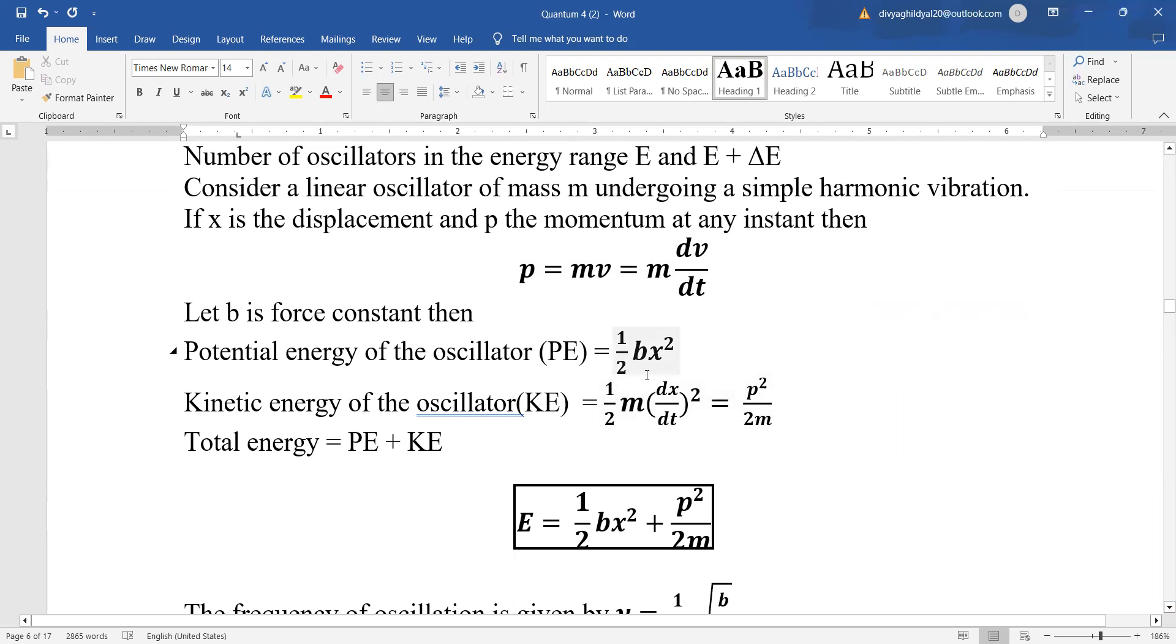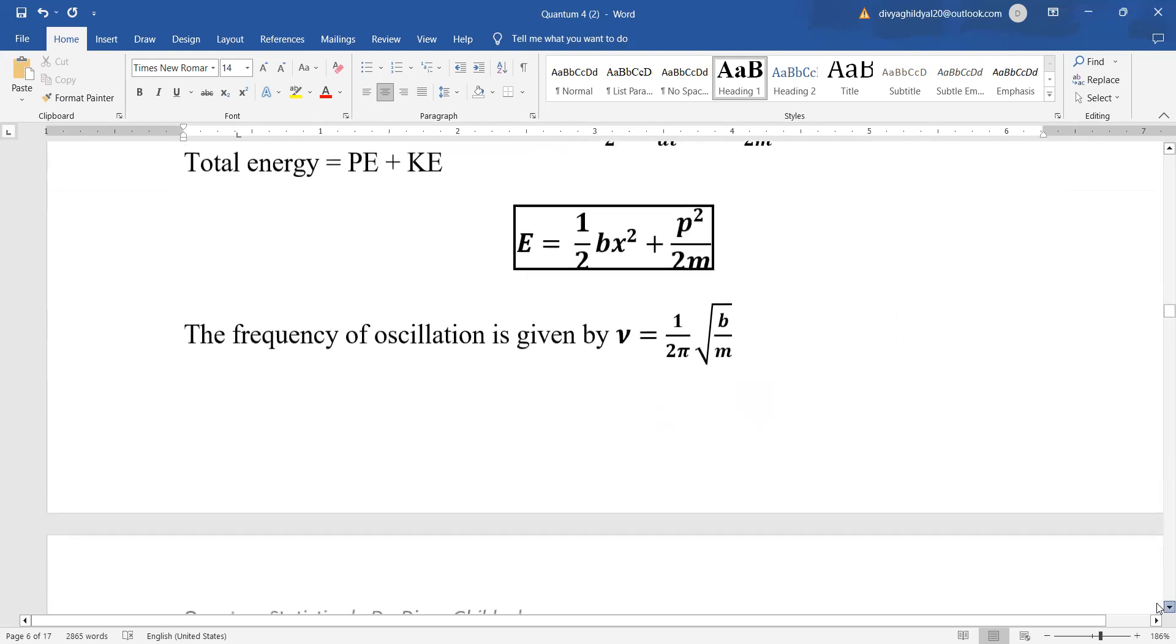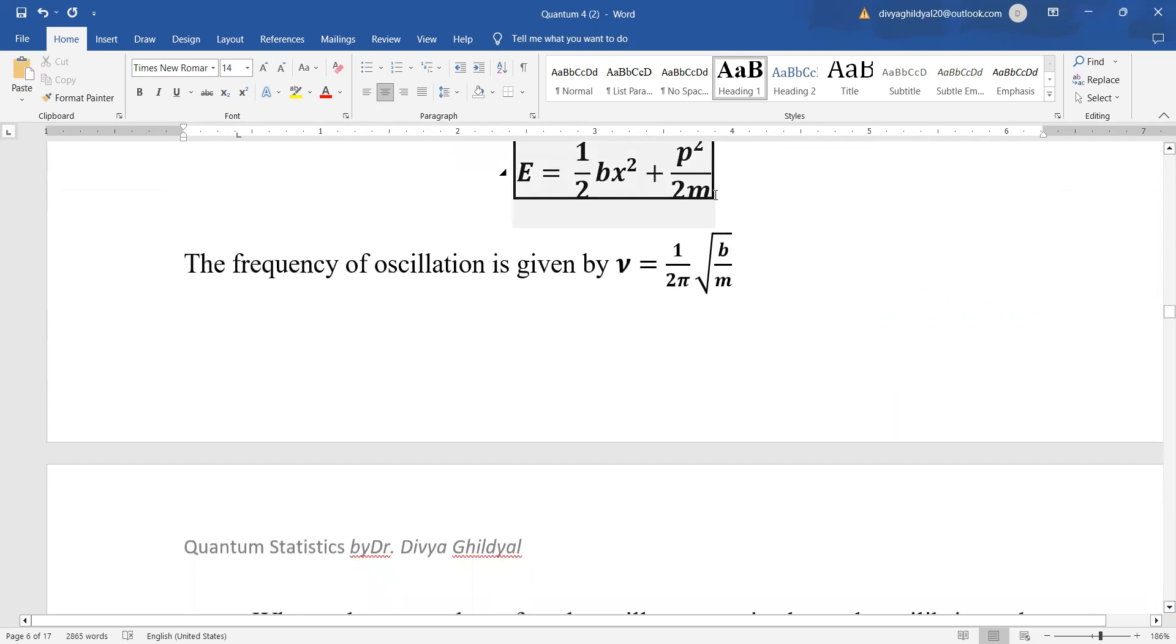Then, potential energy is given by half bx square. Kinetic energy is half mv square where v is dx by dt. So, instead of that, we have written it p square upon 2m. Total energy is equal to potential energy plus kinetic energy.